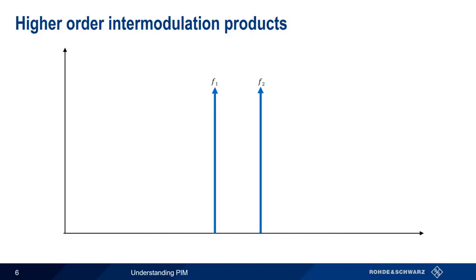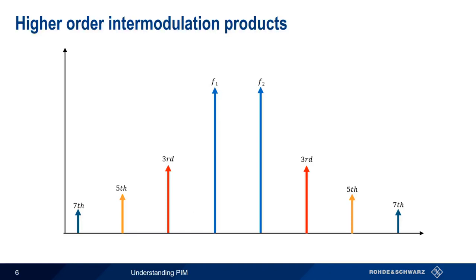In addition to the third order products, higher order products are also produced, such as 5th order, 7th order, etc. However, the amplitude of these higher order products is considerably lower than the amplitude of the third order products. Note, too, that all of these odd-ordered products are spaced the same distance apart, namely F2 minus F1.